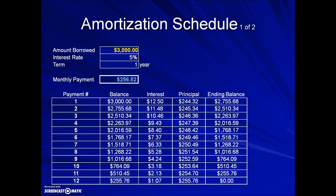Let's look at the first of two examples. Here we have an amortization schedule where this person borrowed $3,000 at 5% interest for one year. Their monthly payment is $256.82. The same two guidelines pertain to this schedule: the monthly payment is split between interest and principal, and the ending balance is affected by the difference between the beginning balance and the principal.